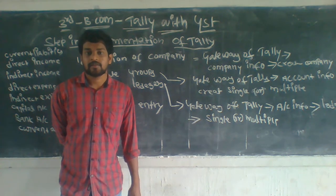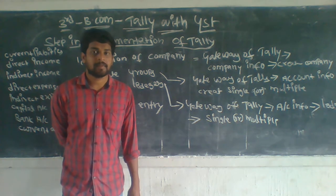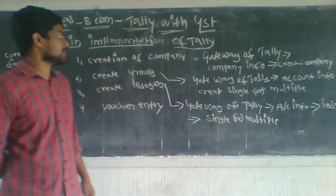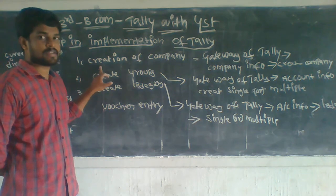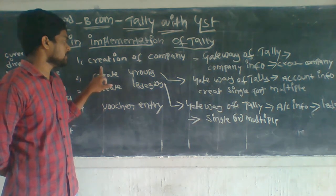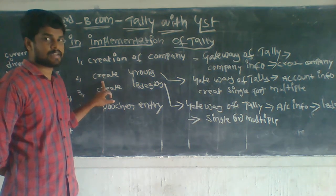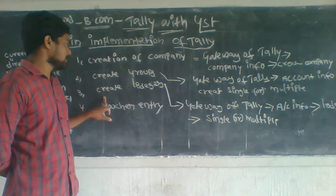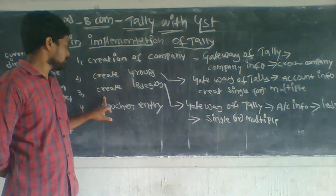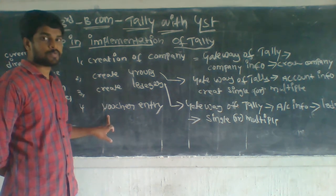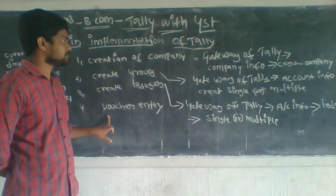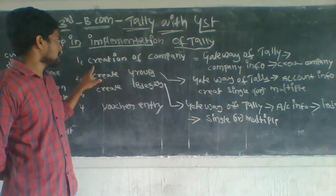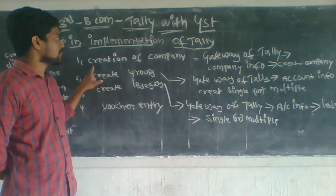Today, we will discuss the steps in implementation of daily management processes. The first one is creation of company, the second one is creation of groups, the third one is creation of leaders, and the fourth one is both job types. Let's start with the first one: creation of company.